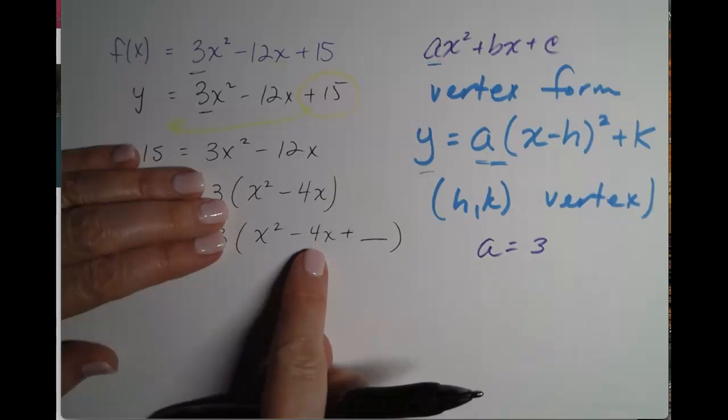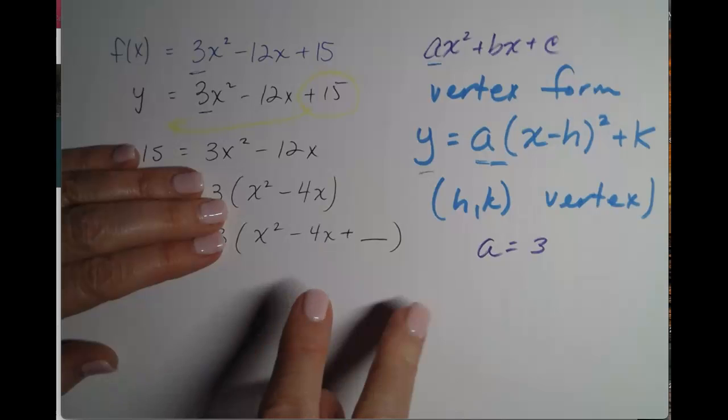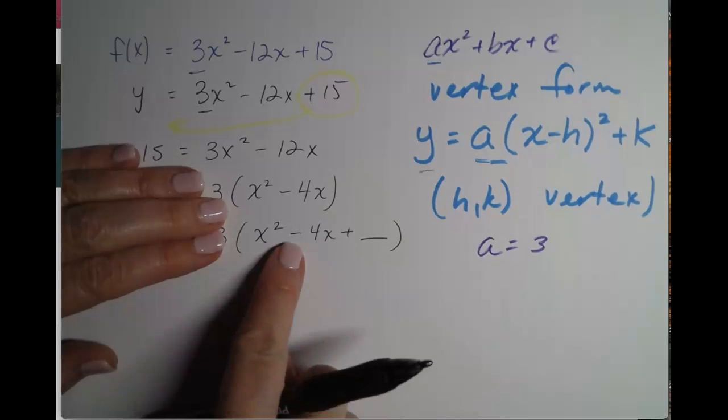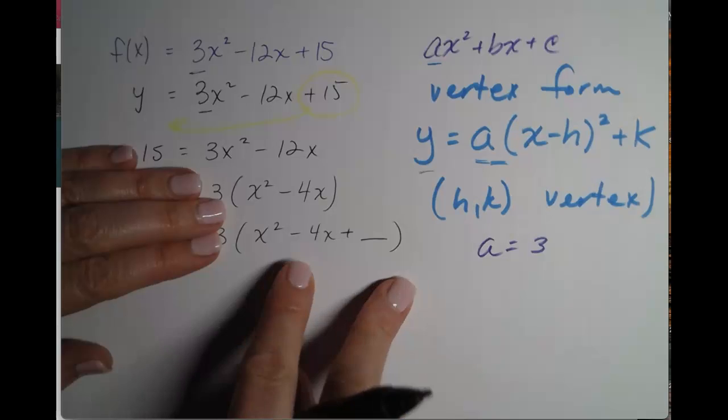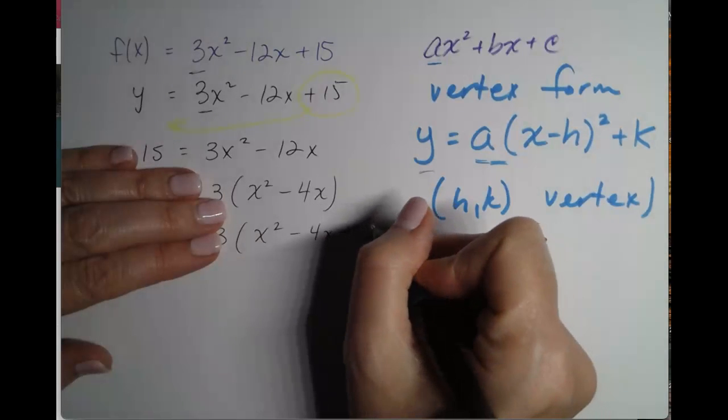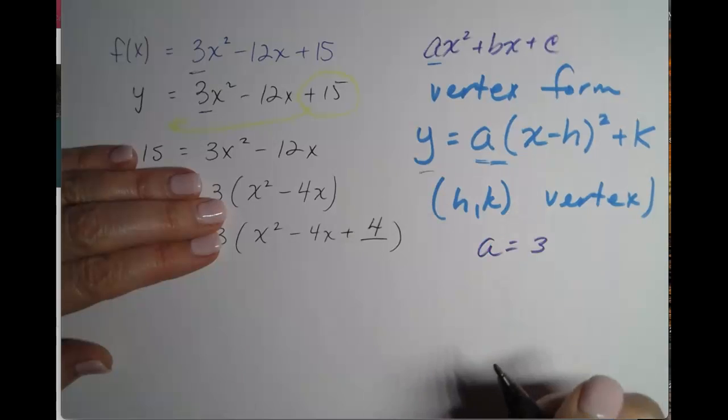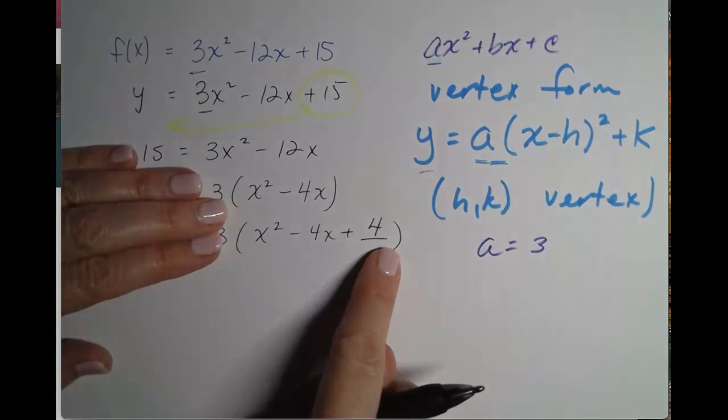Put your finger on that middle term. The middle term is 4. Half of 4 is 2. Now I know it's negative 4, but if you want to think negative 2, that's fine as well. Now to complete a square, half of 4 is 2. We just square that number. 2 squared is 4. So inside of the parentheses, we have added 4.